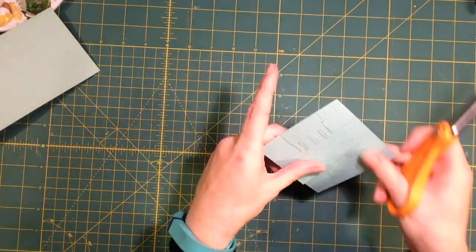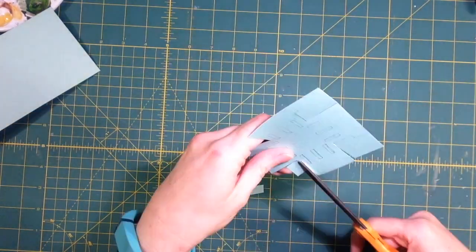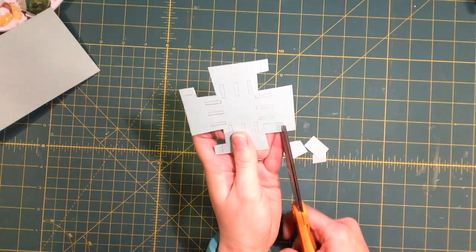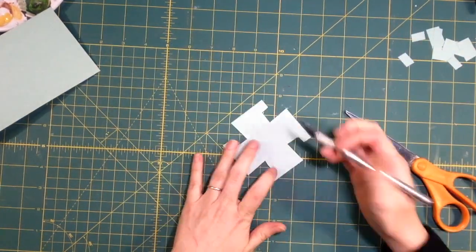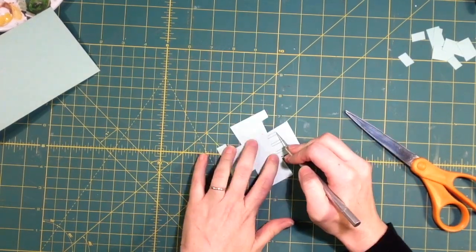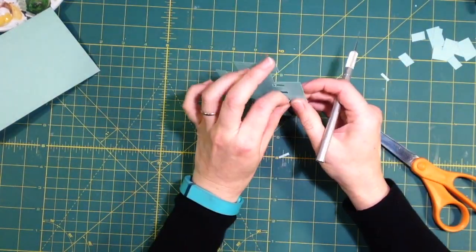After you have it traced or printed on, you're going to cut it out. I left my tabs for gluing the sides a little longer than they were on the template. I use my exacto knife to cut out the tiny little holes.